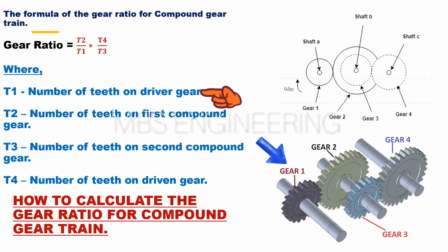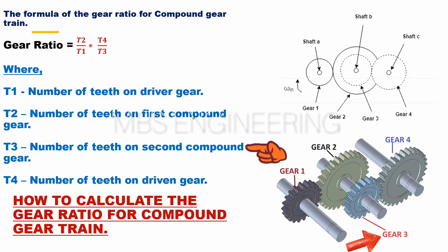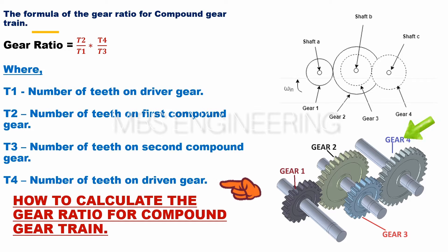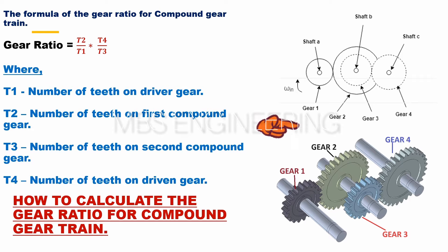Where: T1 is the number of teeth on the driver gear; T2 is the number of teeth on the first compound gear; T3 is the number of teeth on the second compound gear; T4 is the number of teeth on the driven gear. Please refer to the image for the compound gear train consisting of driving gear 1, compound gears 2 and 3, and driven gear 4.